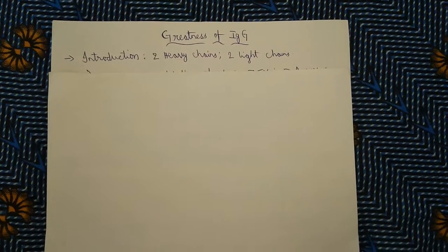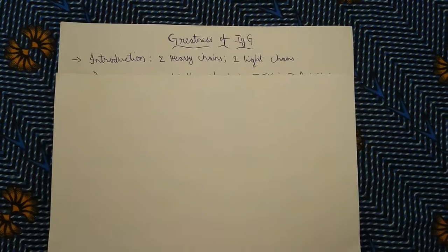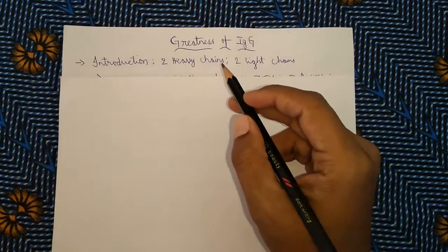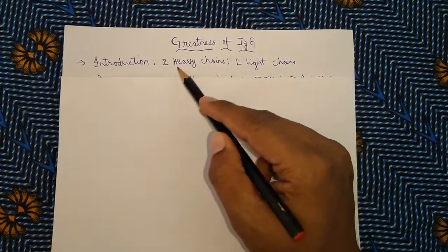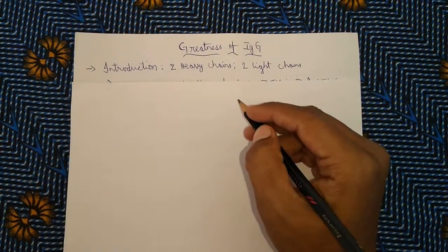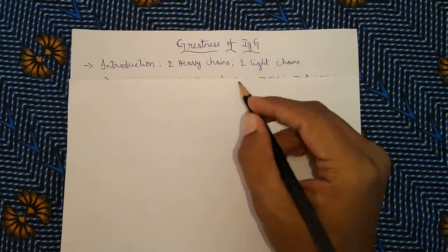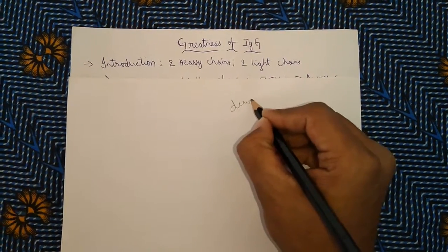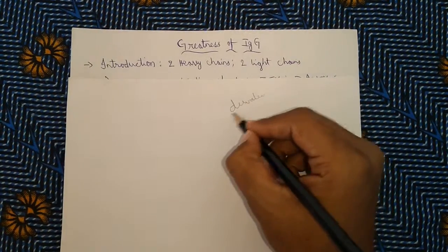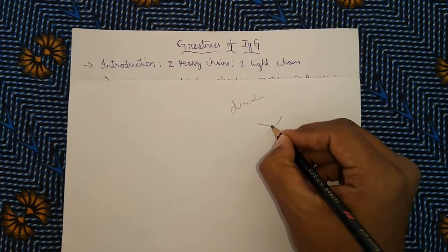Hello friends, today we are going to discuss the exclusive properties of immunoglobulin G molecule. Generally, immunoglobulin G molecule consists of two heavy chains and two light chains. These heavy chains and light chains are bound with disulfide bonds. IgG molecule is considered as divalent because it consists of two identical antigen binding sites.